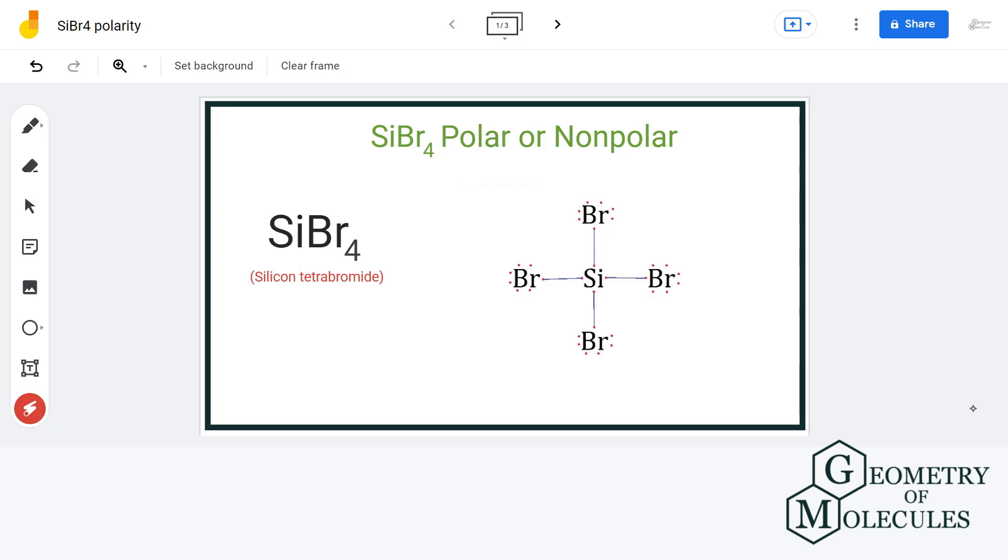So, this is the Lewis structure of SiBr4. And you can see that central atom silicon has formed four sigma bonds with four bromine atoms and has no lone pairs of electrons on it.